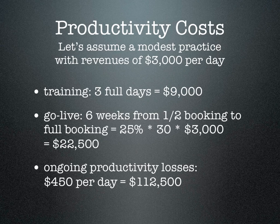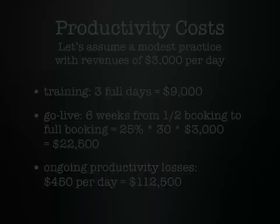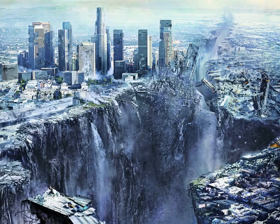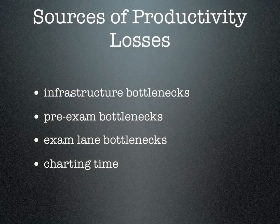The big cost is the ongoing productivity losses — I estimate about $450 per day, and I'll share later where that figure comes from, but that comes out to $112,500 per year. Putting this together, in the first year this very small practice is going to lose $144,000, and it's going to lose $112,000 each subsequent year. The sources of productivity losses are fourfold: infrastructure bottlenecks, pre-exam bottlenecks, examining bottlenecks, and charting time.